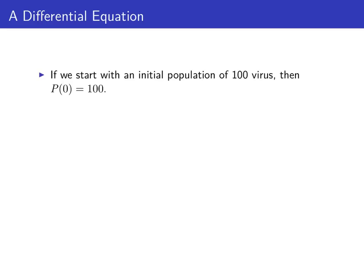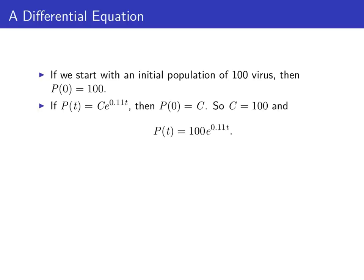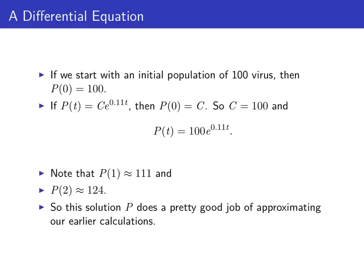If we start with an initial population of 100 virus, that means p(0) = 100. Using our function p(t) = c · e^(0.11t), we get p(0) = c · e^0 = c · 1 = c, making c equal to 100. So our model for the population growth of our virus is p(t) = 100 · e^(0.11t). If you evaluate this function at t = 1 you get about 111, and at t = 2 you get about 124, so this solution p does a pretty good job of approximating our earlier calculations.